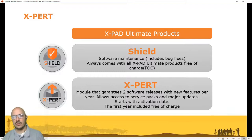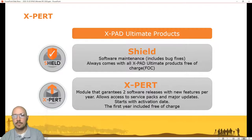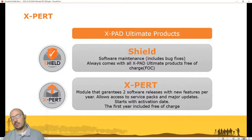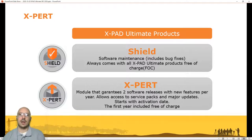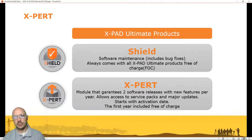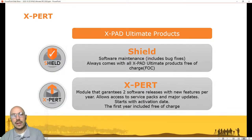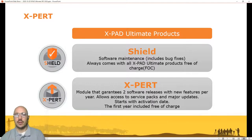Expert is a license that allows use of new functions that were not available when the software was first purchased. In general we guarantee two software releases for Expert every year, but could be more — a minimum of two. After the first activation, one year of Expert is always guaranteed free of charge. Most of the functions we will see today are only available with a valid Expert license, as they are new functions released in this service pack 2.